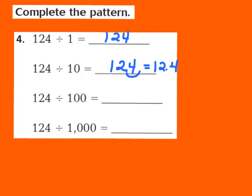Now take a look at the next part in our pattern. We have 124 being divided by 100. In the number 100, there are two zeros. So I'm going to have to move my decimal point two places to the left. I write down my 124, start from behind the 4, and move the decimal one, two places to the left — the decimal now falls between the 1 and the 2. So my quotient turns out to be 1 and 24 hundredths.